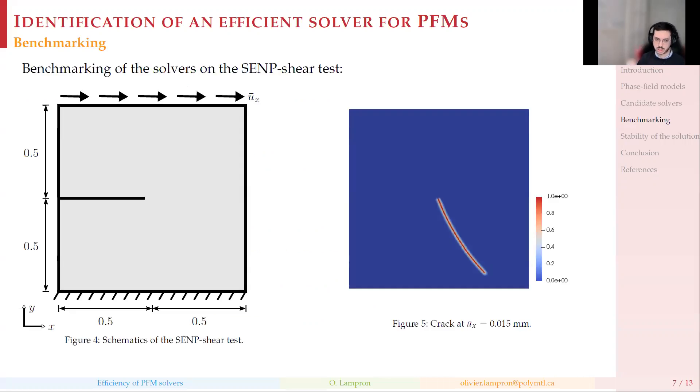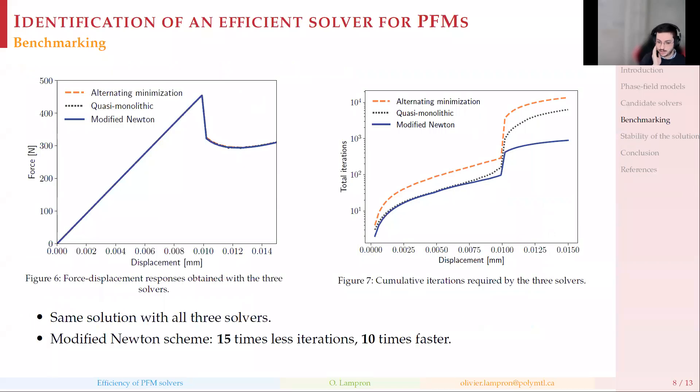If we look at the benchmarking, this is a very simple benchmark that is very popular in the literature. It's a square plate. We introduce a notch in the middle, fix the bottom, and pull horizontally at the top. The crack initiates from the end of the notch and grows towards the lower right corner. I'm presenting only one since the three solvers were giving the same solution. But if we look at the efficiency, there's some important differences. We see on the right that the modified Newton solver is quite more efficient. Where we have this sudden propagation, this drop in the force, we have this really huge instability creating this jump in iteration.